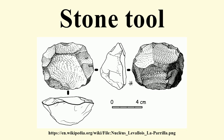Mode 3: The Mousterian industry. Eventually, the Acheulean in Europe was replaced by a lithic technology known as the Mousterian industry, which was named after the site of La Moustier in France, where examples were first uncovered in the 1860s. Evolving from the Acheulean, it adopted the Levallois technique to produce smaller and sharper knife-like tools as well as scrapers. The Mousterian industry was developed and used primarily by the Neanderthals, a native European and Middle Eastern hominin species.